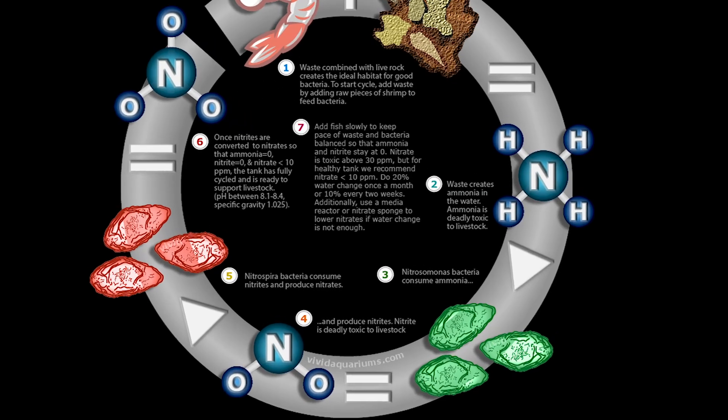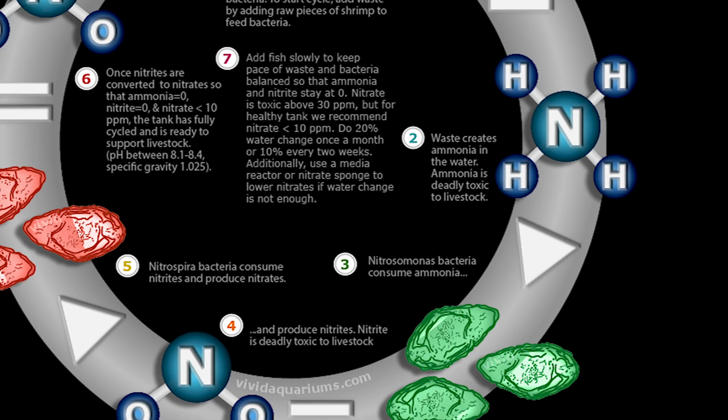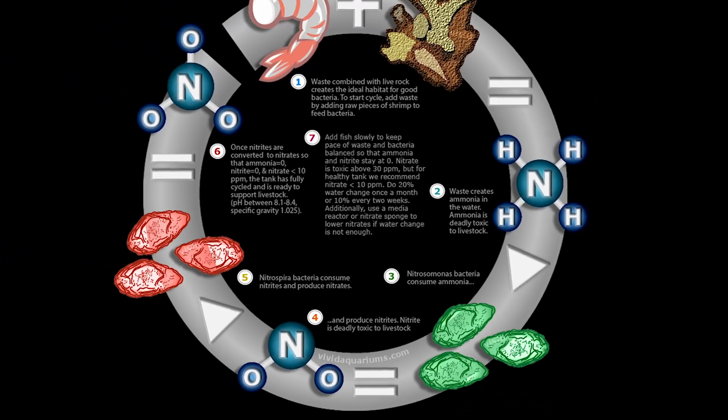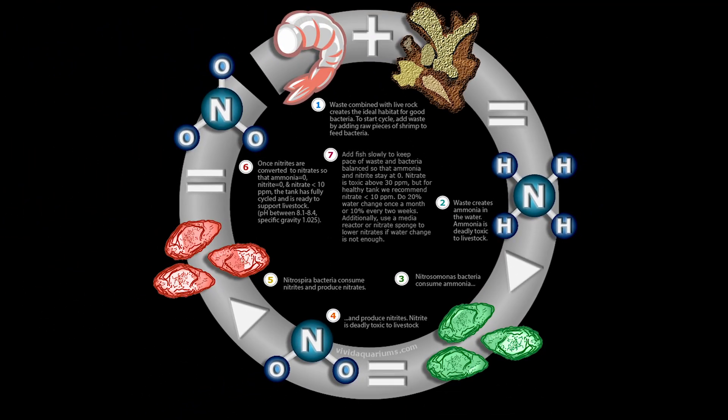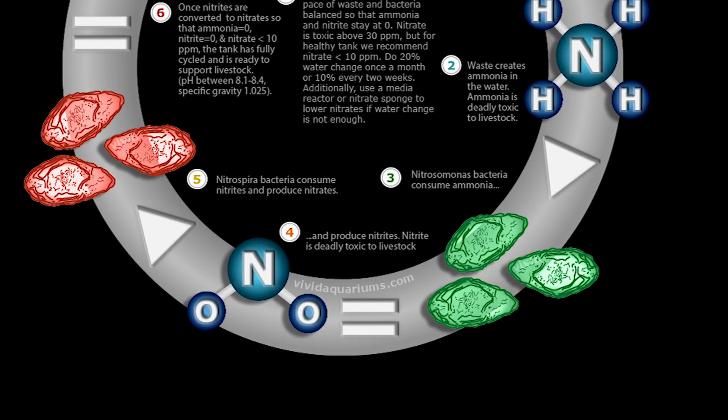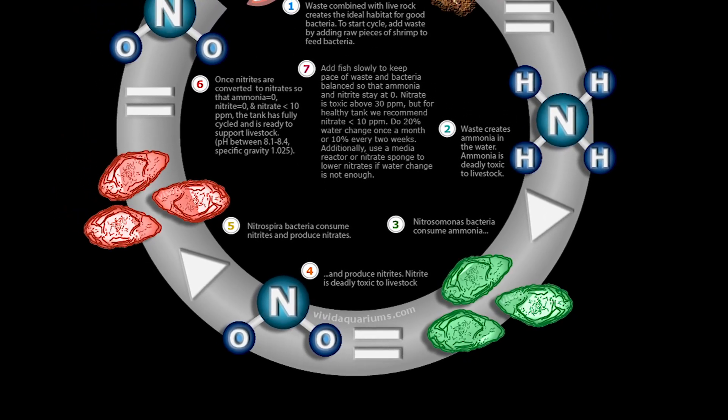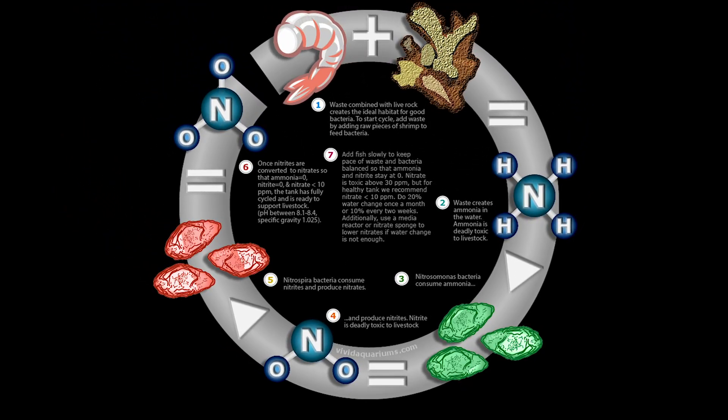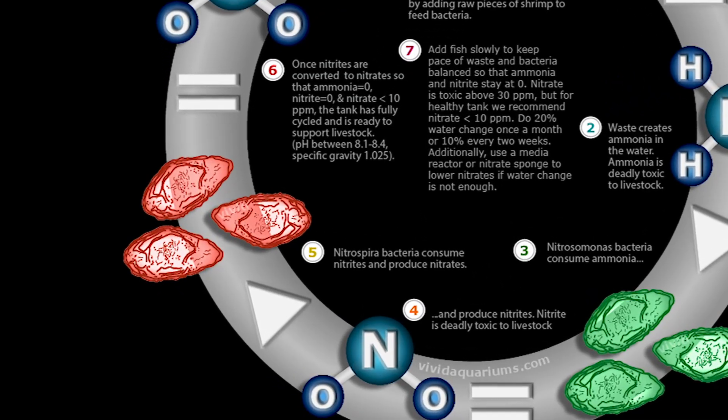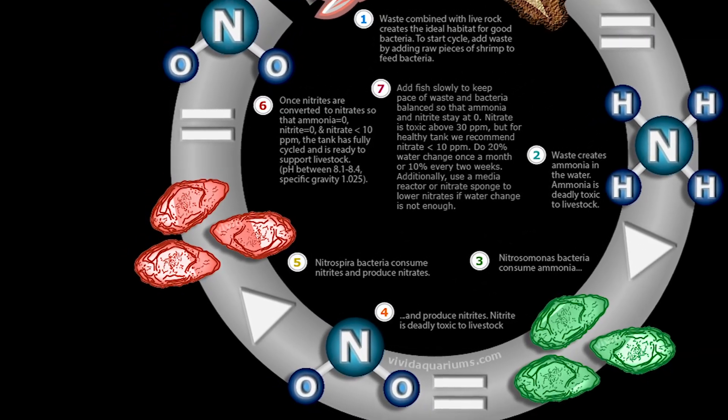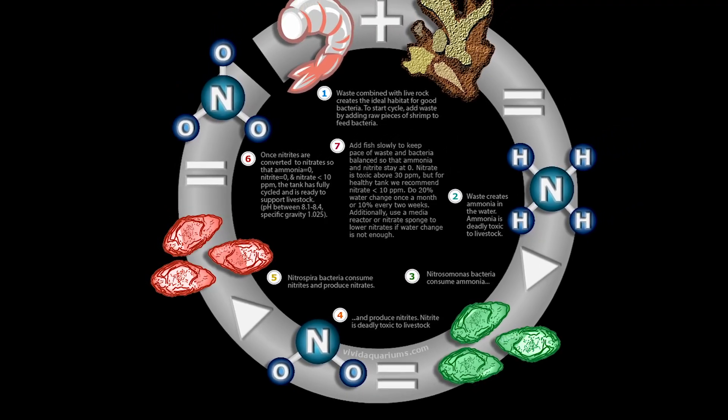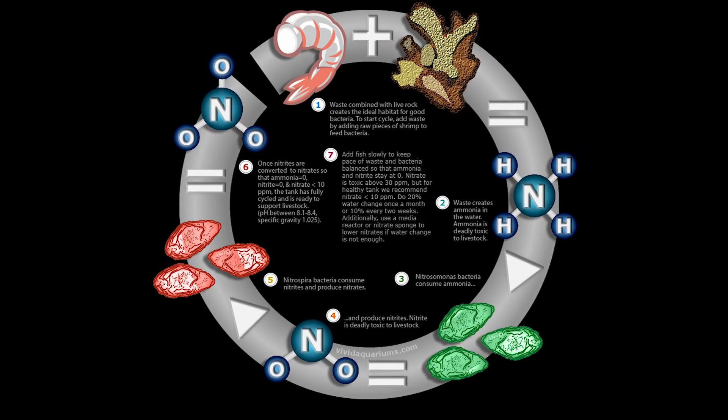All right, number three, the nitrosomonas bacteria. They are now thriving and consuming the ammonia. And now they are producing number four, nitrites. And nitrites are also super deadly and toxic to livestock. So keep an eye on your nitrite levels as you're cycling. Next comes into play your nitrospira bacteria, which they consume the nitrites and that produces your nitrates. So they consume nitrites and produce nitrates through their waste.